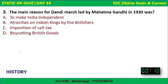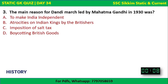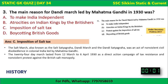Question 3: The main reason for the Dandi March led by Mahatma Gandhi in 1930 was what? The correct answer is the imposition of salt tax. It is also known as the Salt Satyagraha or Dandi March Satyagraha. It was an act of non-violent civil disobedience in colonial India. It was a 24-day long march lasting from 12th March to 6th April 1930 as a direct action campaign against the British salt monopoly.